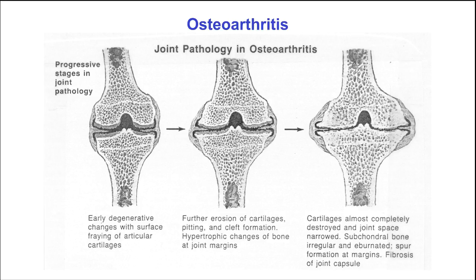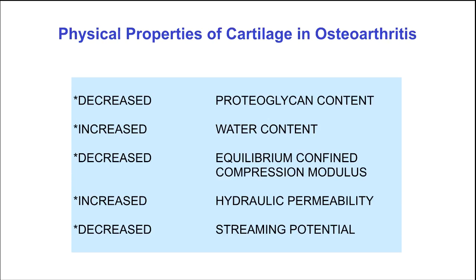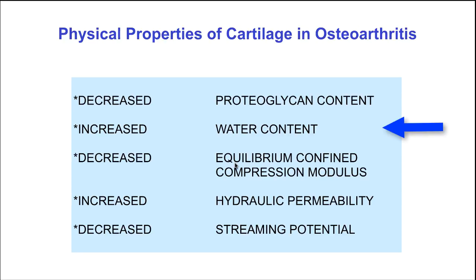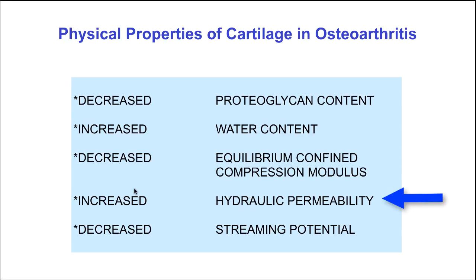Osteoarthritis is progressive, starting with fraying of the surface and fibrillation of collagen, followed by erosion and pitting of the cartilage surface and bone growth, and ultimately complete loss of cartilage, bone-on-bone contact, and fibrosis of the joint capsule. In osteoarthritis, the proteoglycan content is decreased, water content increases, the equilibrium confined compression modulus decreases, hydraulic permeability increases, and streaming potentials decrease.